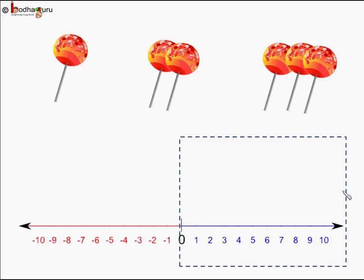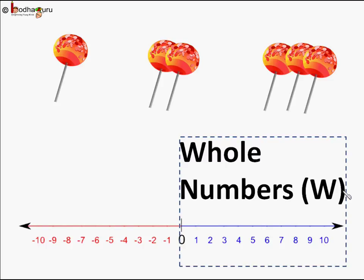Now if we add 0 to the natural number collection, we get whole numbers. So the collection of whole numbers includes 0, 1, 2, 3, 4 and so on, and it is denoted by W.